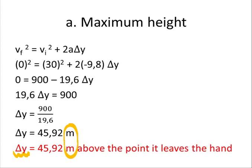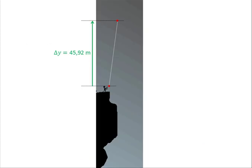We must also give the position relative to where we started — the thrower's hand. Because the answer is positive, that means upward, which is obviously correct since the ball was thrown upward. The final answer is 45.92 meters above the thrower's hand.